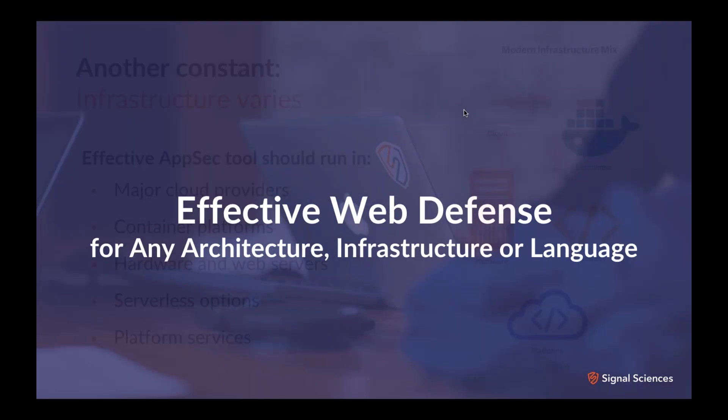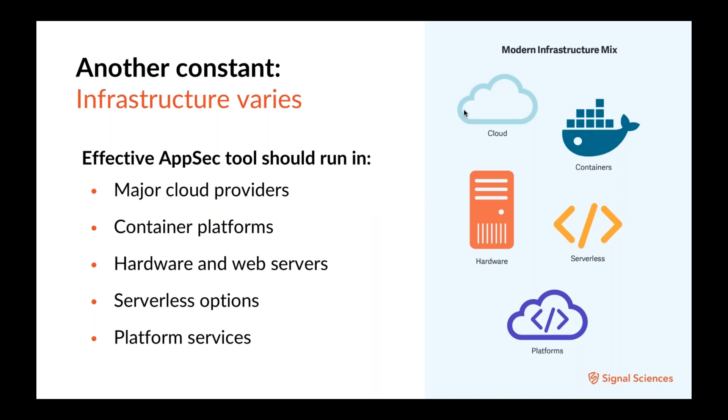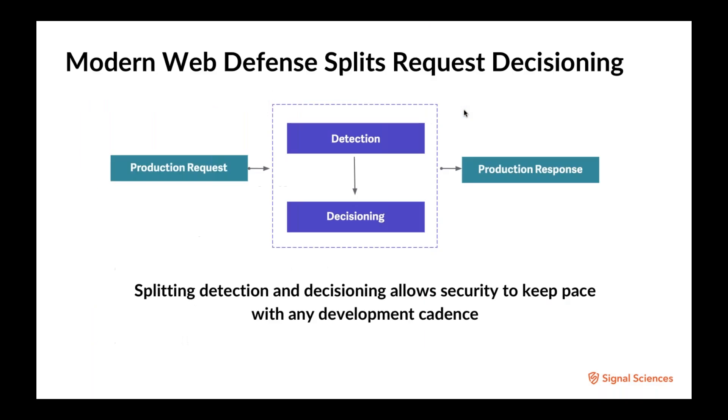As far as effective web defense, there's another constant. So change is obviously something in technology and software development always at play. But because infrastructure varies, we have to look at where an application security tool should run in terms of infrastructure. A homogenous infrastructure in an organization of any size is very unlikely. One of the keys to security and defending modern applications and APIs is breadth of coverage across any infrastructure. Because the application has been decomposed into smaller services and components, the defense needs to be spread to those same delivery stacks as well. And to get the necessary coverage, defense tools, whether an open source or commercial should be evaluated for use on these different pieces of infrastructure. So major cloud providers, that's AWS or IBM, Google Cloud Platform. Container platforms, so Kubernetes, Docker. Hardware web servers, so that's your load balancers and web servers. Serverless options such as API gateways. Platform services like Heroku or other language plugins.